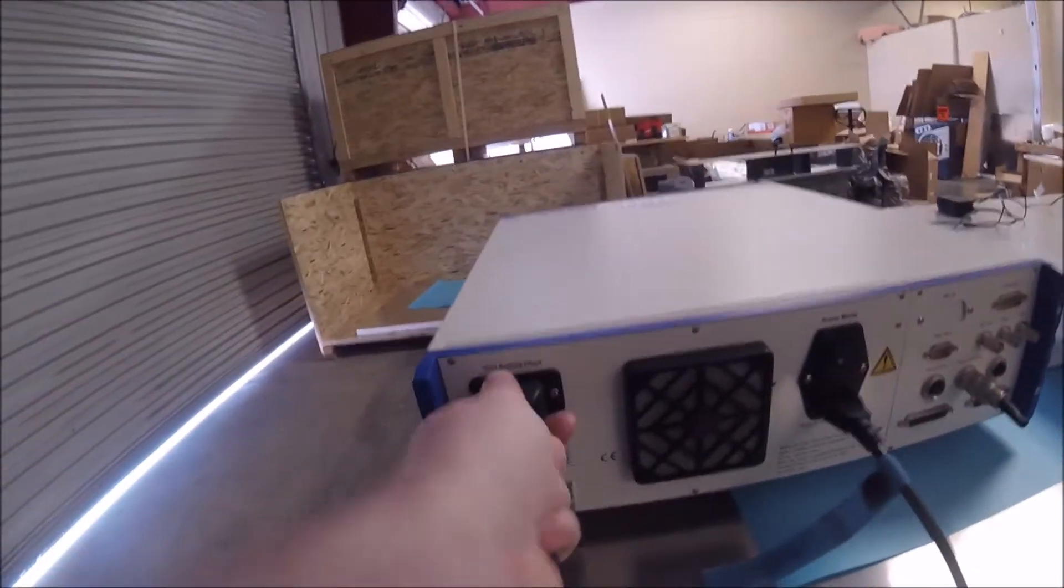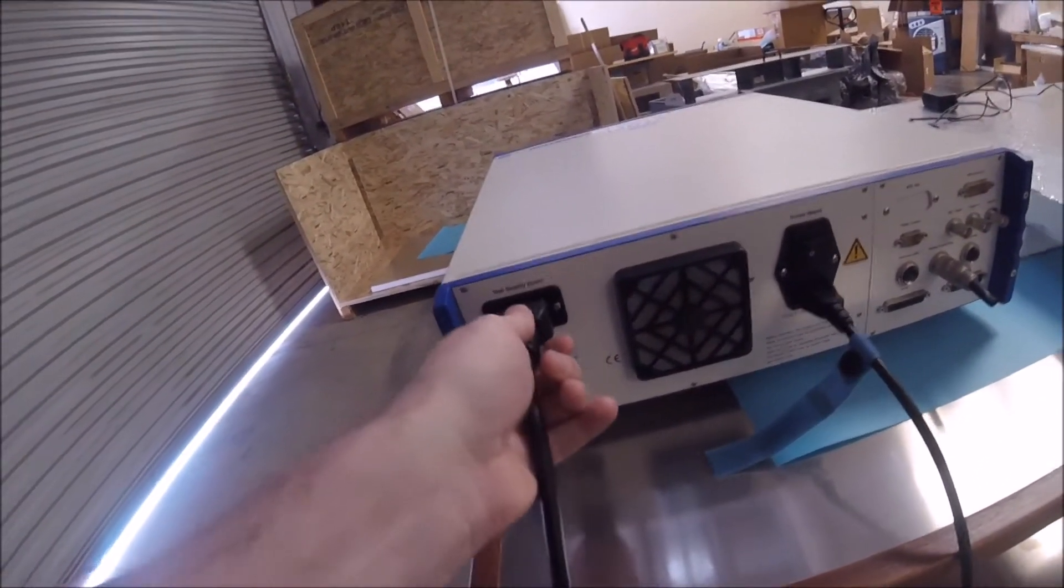On the back of the unit we have our EUT power input which feeds into the decoupling network built into the generator. Note the NEMA C19 connector, standard AC input cable, and an interlock connector.